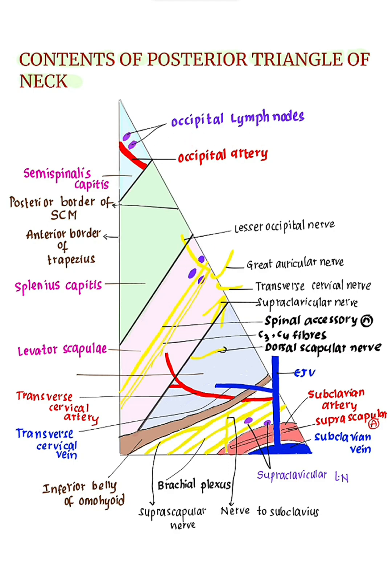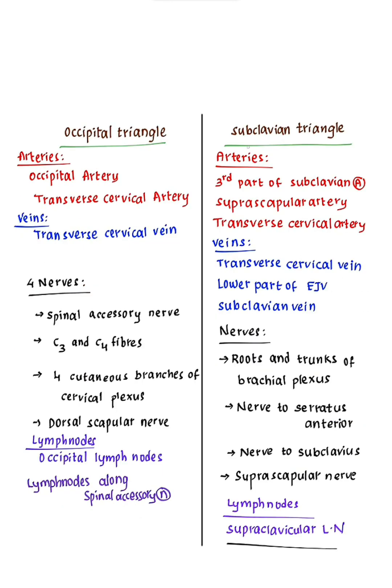Lymph nodes of the occipital triangle: occipital lymph nodes and lymph nodes along the spinal accessory nerve. Next, contents of the subclavian triangle.